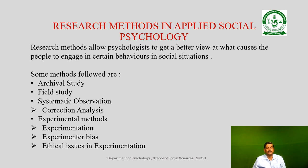First, archival study: we want to know what studies have been done so far and preserved in a certain area so that we can know the real status — that is the major use of archival study. Second, field study: going to the field and studying people in natural settings, with or without their knowledge. When people feel that somebody is observing them, they may tend to be very ideal rather than real — this is called the actor-observer effect.